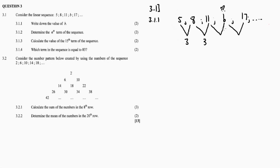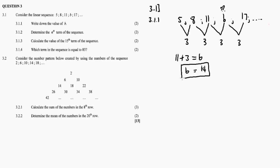Because the common difference is consistently 3, it's a linear pattern. So b must also follow the pattern with a difference of 3. So 5 plus 3 gives 8, 8 plus 3 gives 11, and then 11 plus 3 is equal to b. Therefore b is equal to 14.